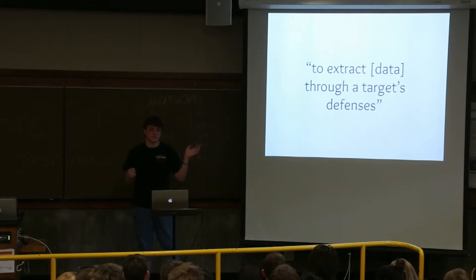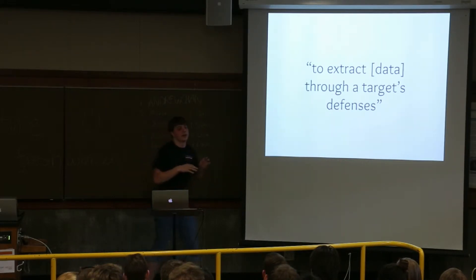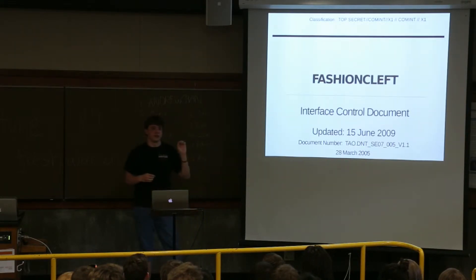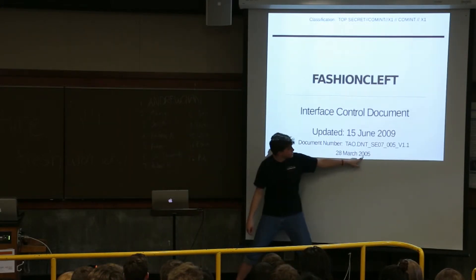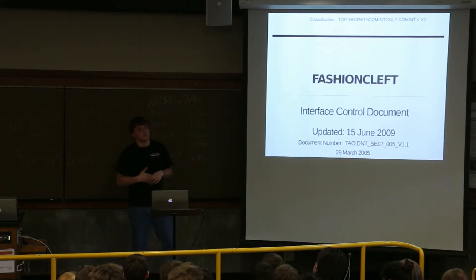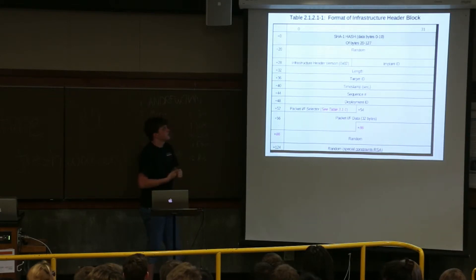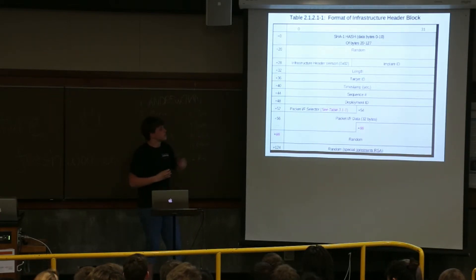You can track data through a target's defenses. The NSA is really good at this. For every bit that they're good at placing implants in target systems, they're even better at getting that information out. They actually have an entire internet protocol that runs on the regular internet, transparently, called Fashion Club. And they've actually had it for a long time. It was 2005. And it's an extremely sophisticated protocol that works similar to a regular IP, except it has magical special stuff in it.